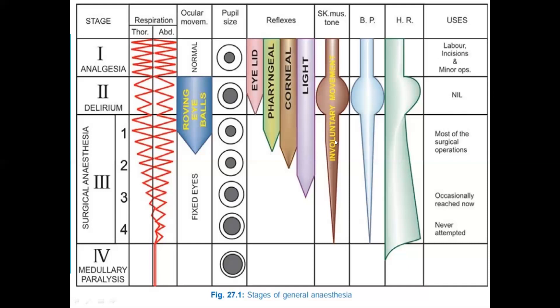Stage 3 is the stage of surgical anesthesia — our main target for surgical operations. It is divided into four planes. Plane 1 spans from onset of automatic respiration to cessation of eyeball movements. You can see automatic respiration beginning here, and eyeball movements reducing.